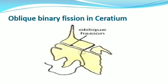Let us see how binary fission occurs in Ceratium. In Ceratium, the plane of division occurs in the oblique direction — oblique means a slanting direction. Ceratium is a unicellular dinoflagellate having two flagella, one shorter and one longer. During binary fission, the nucleus divides by mitosis, followed by division of the cytoplasm from the anterior to the posterior side, resulting in the formation of two unicellular daughter individuals.